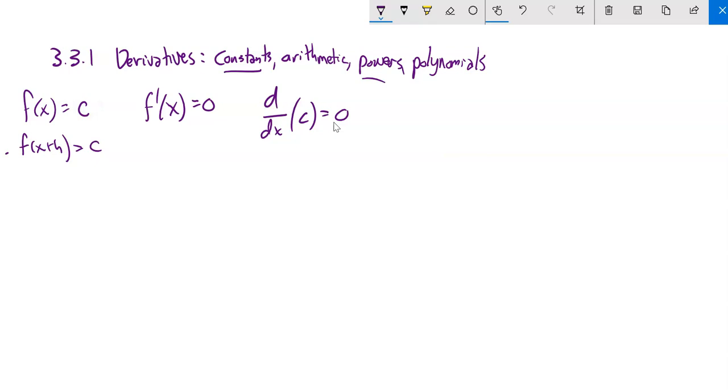So constants, when we go to take the derivative, give us a 0. Powers. I'm going to do the rule first. If f of x is x to the n, and if you've taken a calculus course before, you've seen this definition.